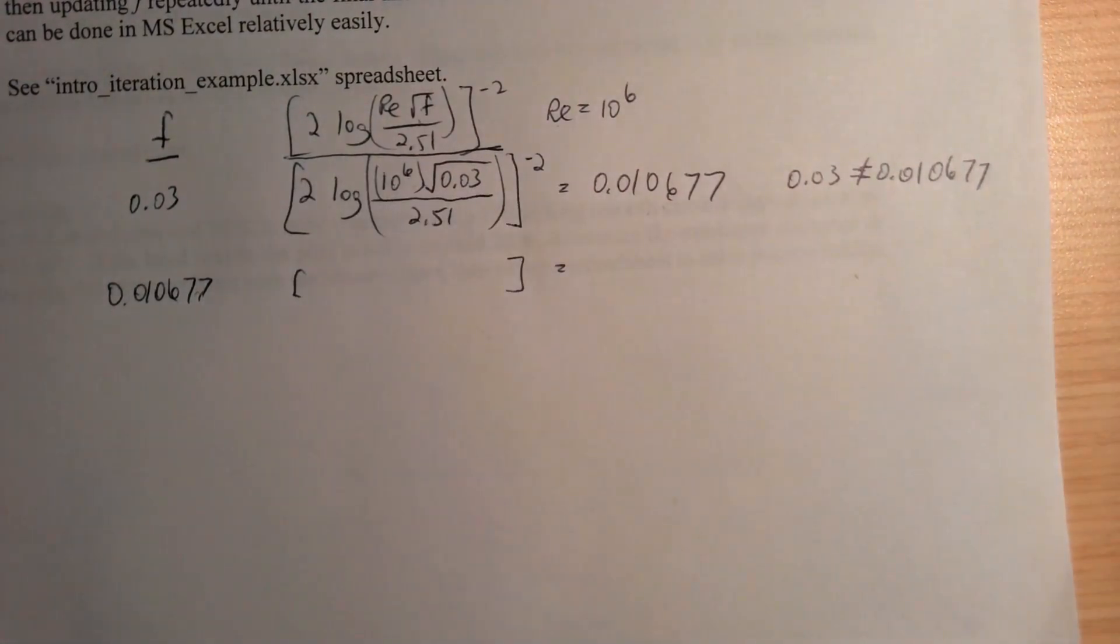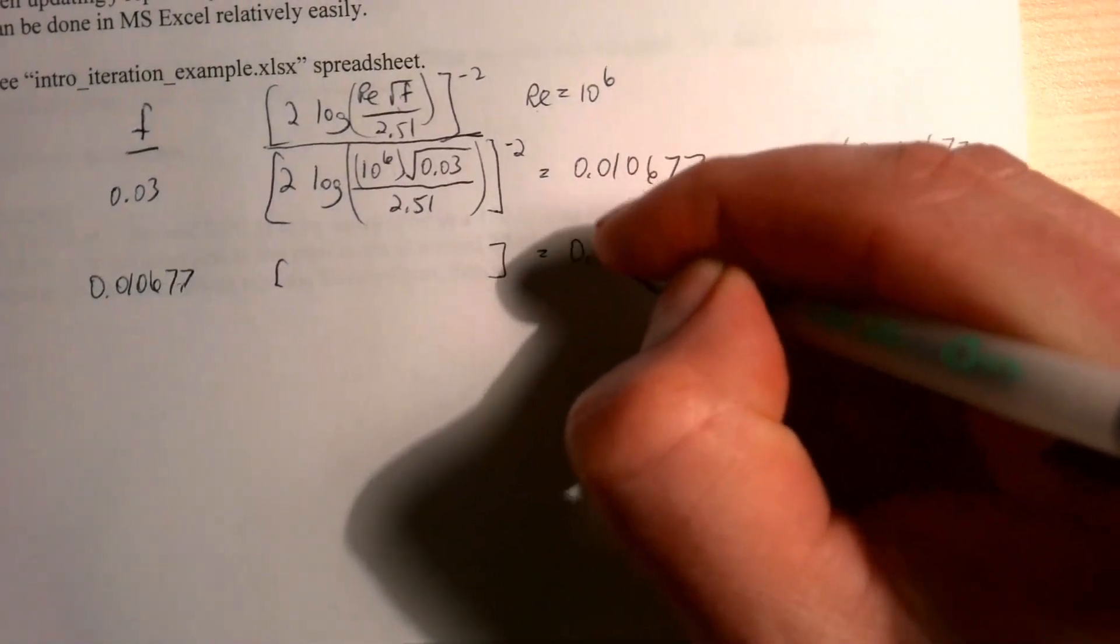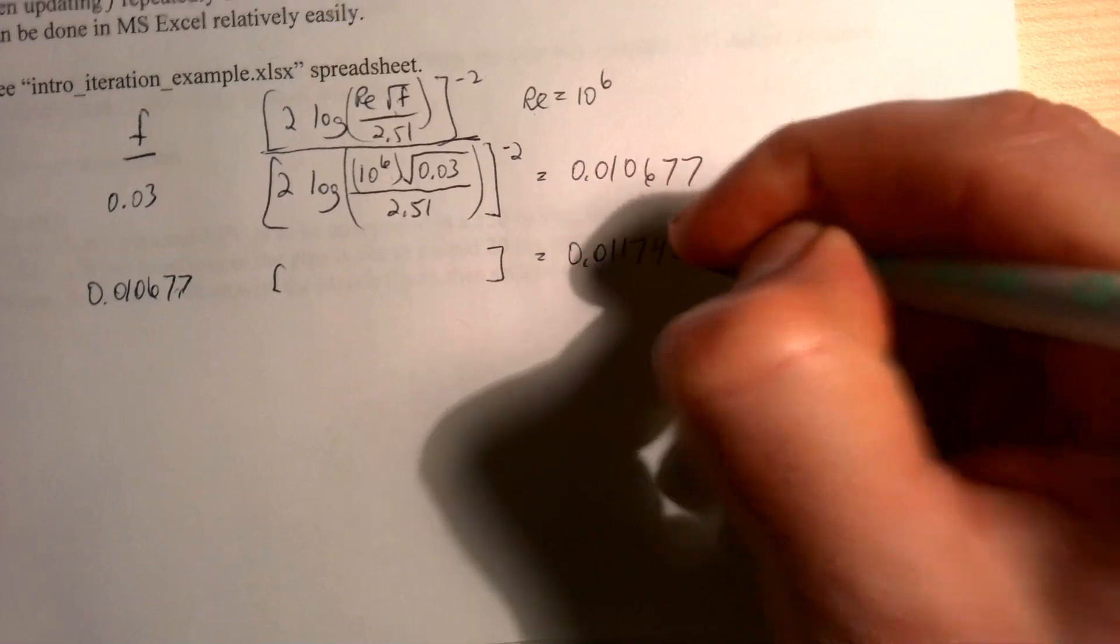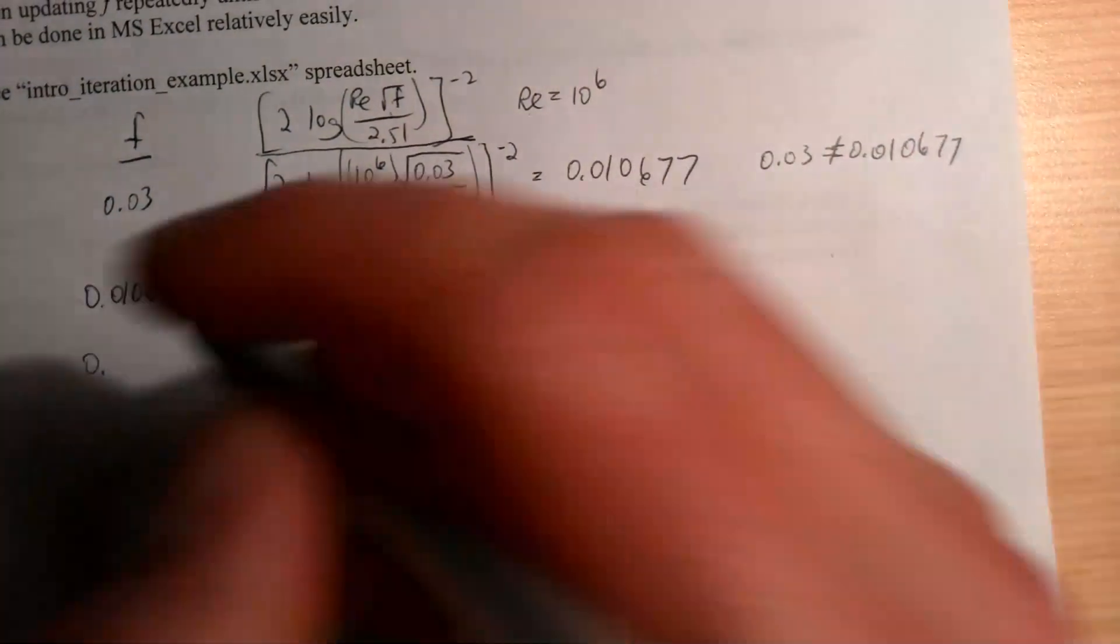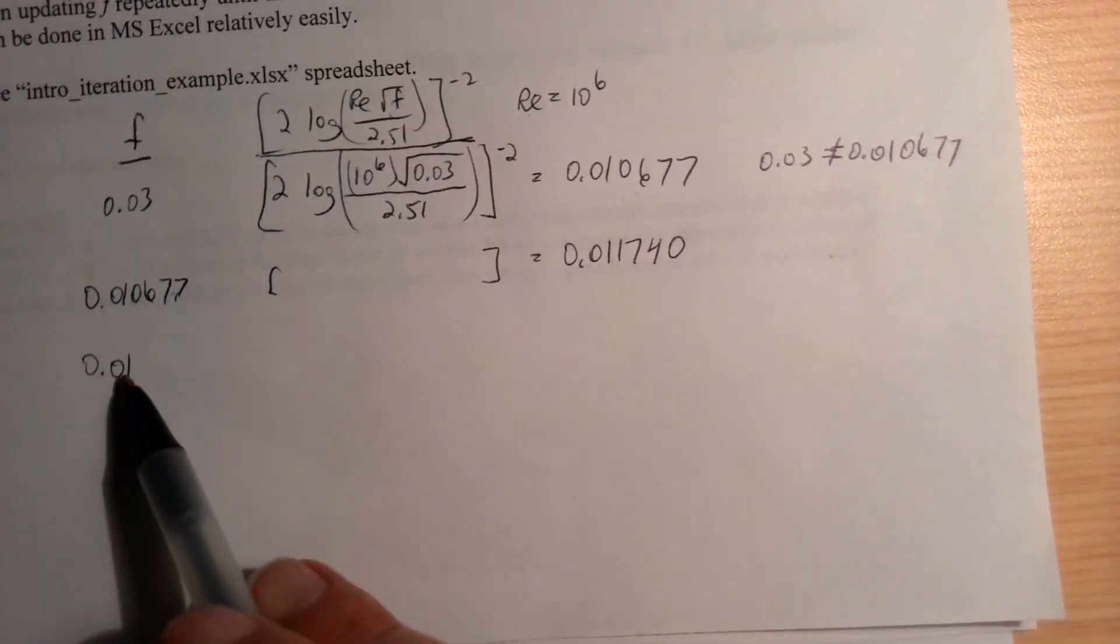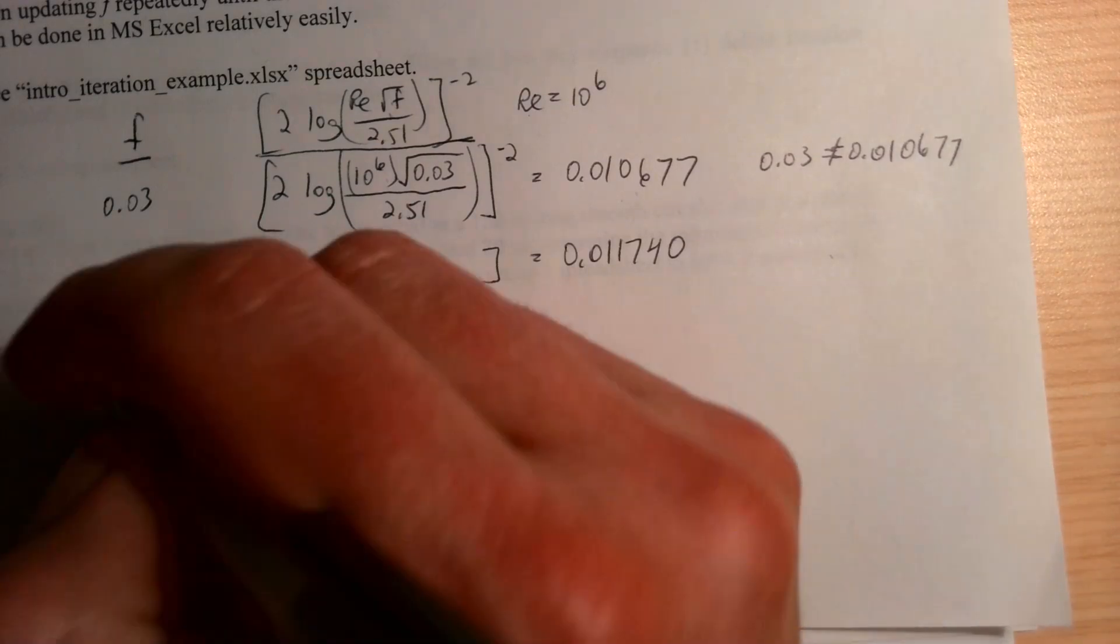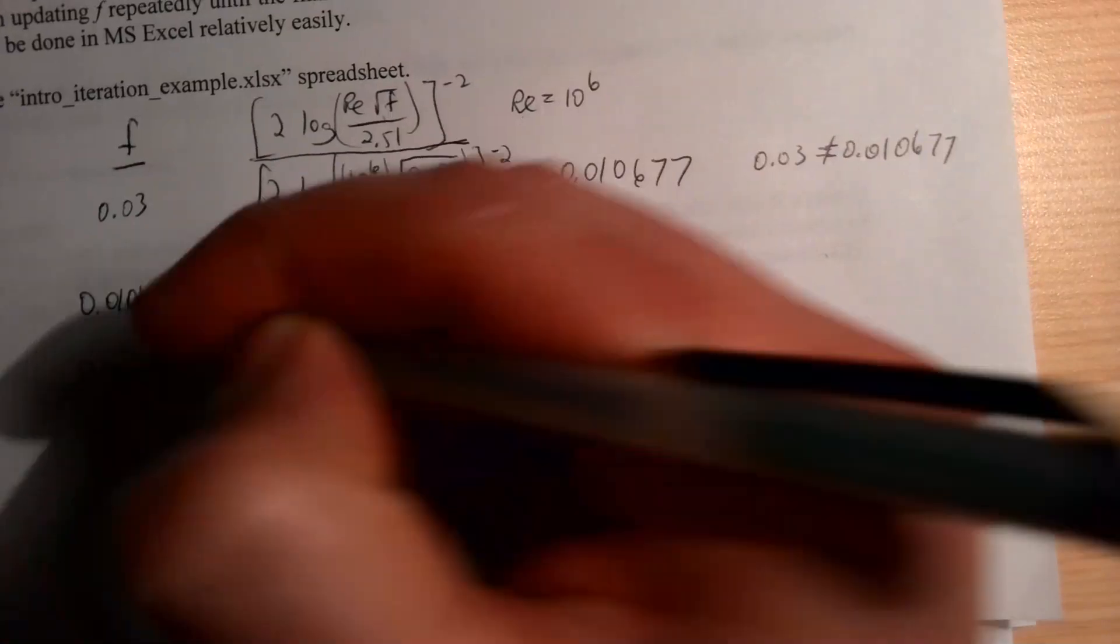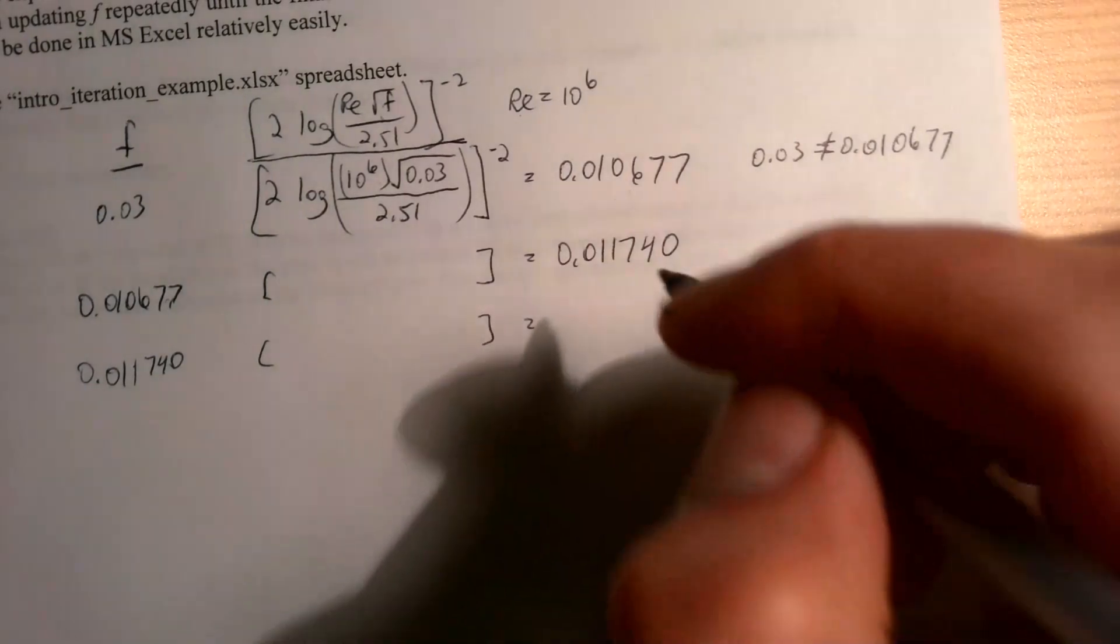So we guess this, and then if I do this calculation here, which I'll just put a parentheses—imagine we're doing all that again with the 0.0106—then I get a new value of 0.011740. So that then becomes my next guess, and you can see that it changed from 0.03 to 0.0106, and now it's changed only a little bit. As the changes get smaller and smaller, we can be more confident that we're getting close.